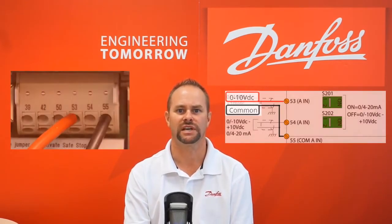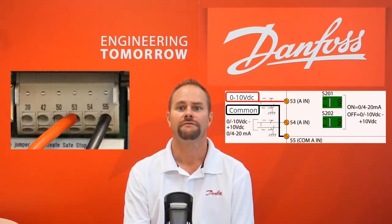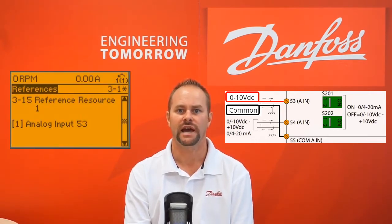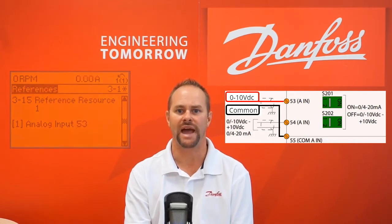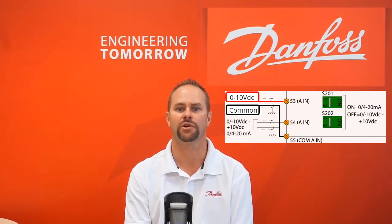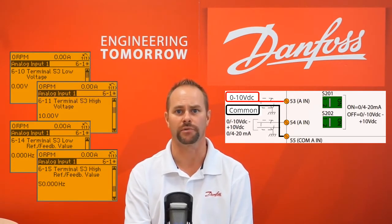The VFD can be configured to accept either a current or voltage type speed reference signal. For the purpose of this video we'll be using a 0 to 10 volt DC signal connected to analog input terminal 53 as our speed reference. First, we need to verify that analog input 53 is defined as the reference source by checking parameter 315. Next, we're going to check that our minimum and maximum reference parameters are set to the correct values. Lastly, we'll go to the 6-1 parameter group and verify that our reference signal is scaled properly.